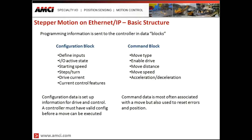The configuration data block also defines the starting speed, the steps per turn or microstepping of the drive and controller, the drive current, and current control features such as idle current reduction. Once the device is configured and the configuration has been accepted, we can move on to issuing commands — moves, preset functions, resets, and similar operations. Anything that is not part of the configuration is covered under the command block.